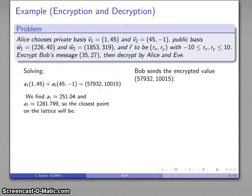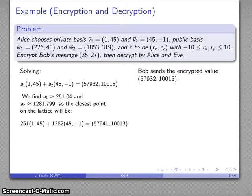Using Babai's algorithm, we find that A1 is close to 251 and A2 is close to 1282. And so that suggests that the closest lattice point is going to be 251 V1 plus 1282 V2.